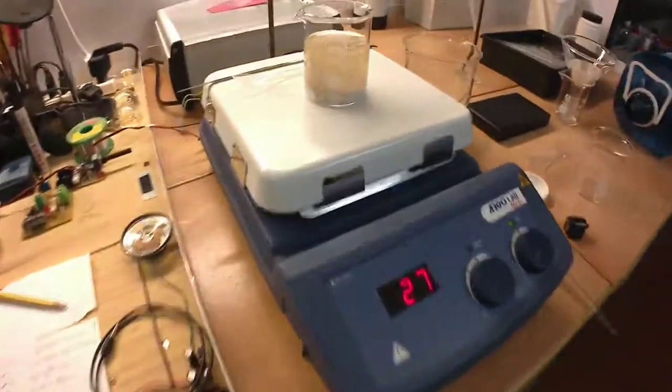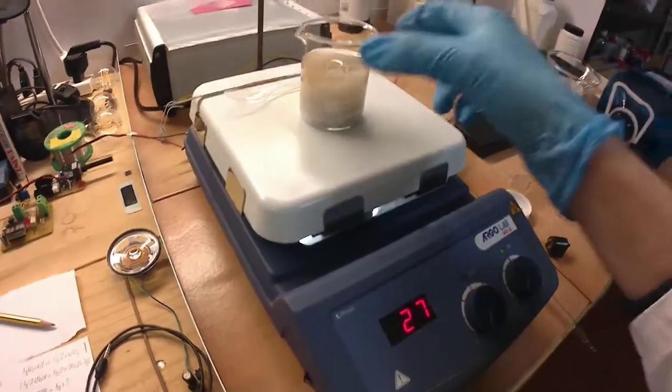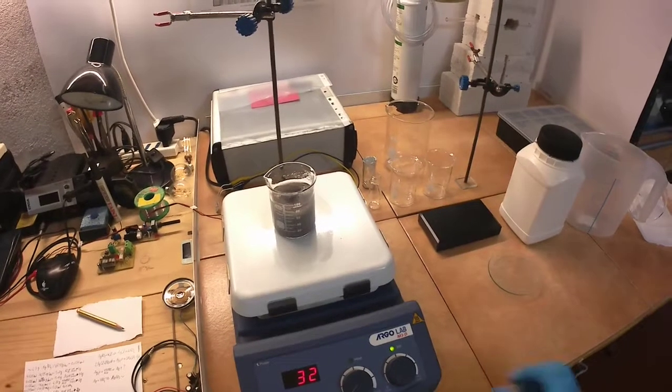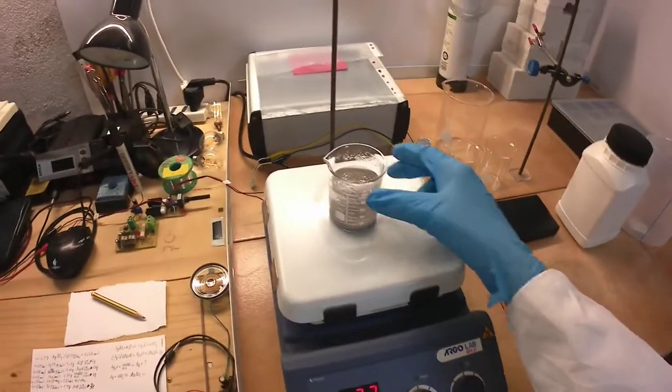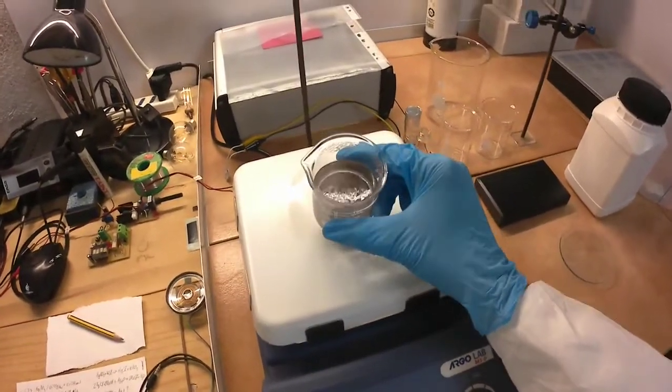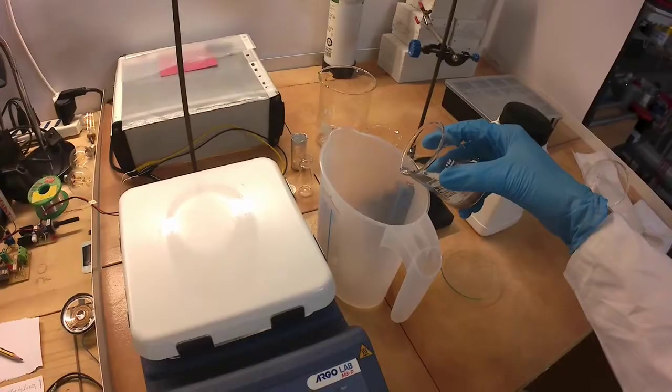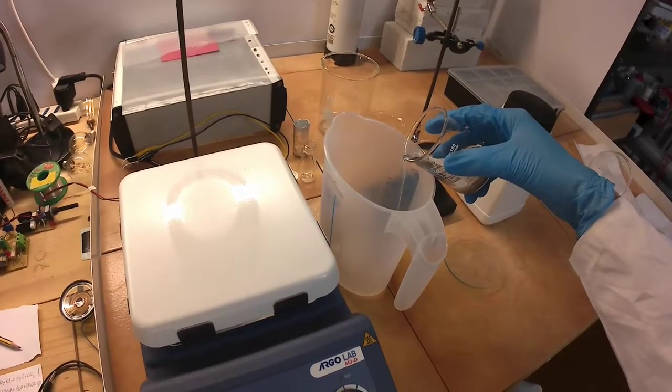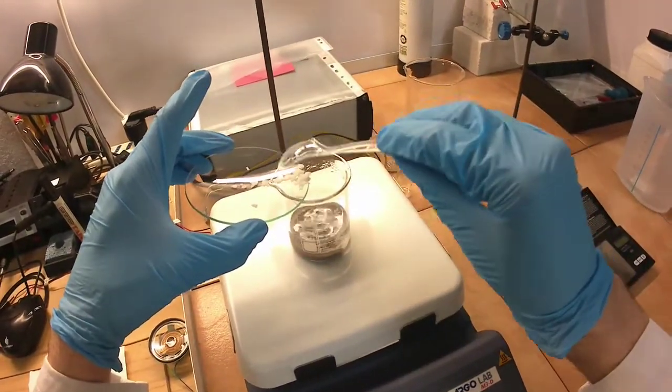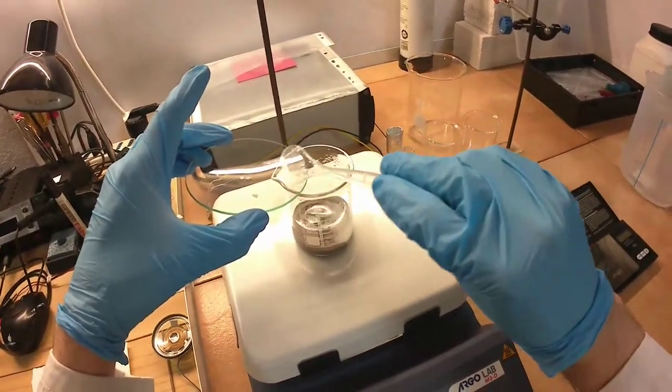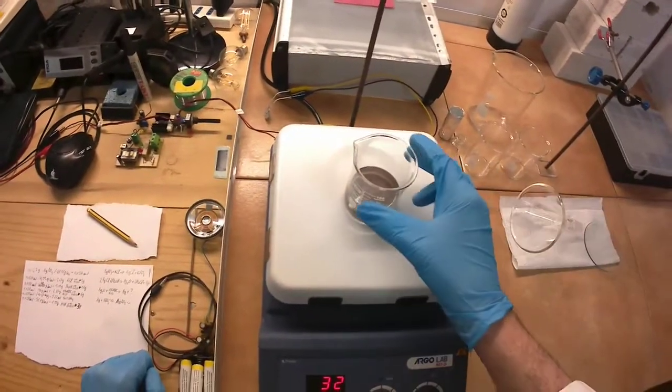At first, I stirred for an hour without heating, but the reaction seemed to progress too slowly, as I could see some white flakes of silver chloride. So I decanted some of the water to reduce the volume, added 3 more grams of hydroxide, and this time heated the beaker to 60 degrees. After a couple of hours, the reaction looked complete.